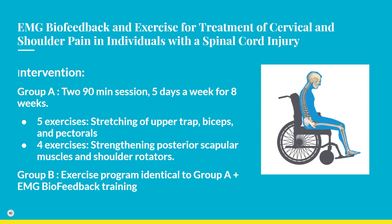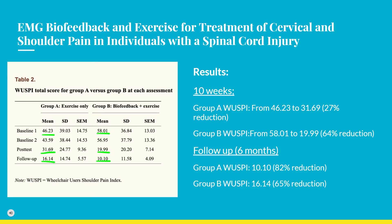Group B received home exercise instructions identical to Group A, followed by three to four additional sessions over six weeks of EMG biofeedback training carried out by a physical therapist. EMG biofeedback targeted four key muscles: upper trapezius, lower trapezius, anterior deltoids, and infraspinatus on both sides. EMG biofeedback was also used to improve posture during wheelchair propulsion. The results indicated that muscle training with EMG biofeedback added value to reducing shoulder pain in patients with SCI.